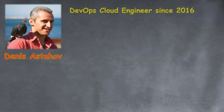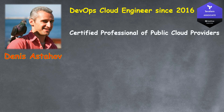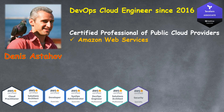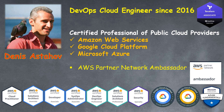My name is Dennis, nice to meet you. I'm a DevOps cloud engineer since 2016. I am a certified Terraform Associate, so I know what the exam is covering. I'm also a certified professional of AWS, and at the time of this recording I have seven AWS certifications. I'm also a certified professional of Google Cloud Platform — I have two — and I also have one certification from Azure. In addition to this, I was nominated by AWS as an AWS Partner Network Ambassador since 2019.